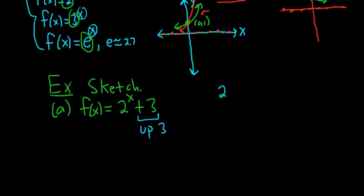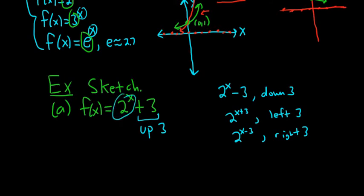We're adding 3 to the actual function, so we're shifting the entire function up by 3. If it was 2^x - 3, it would be down 3. Whenever you add a number to the x, it's backwards - you think it's right, but no, it's left 3. And if you subtract a number from the x, it's backwards, it's right 3. In this case, we're adding a number to the entire function, so we're going up 3.